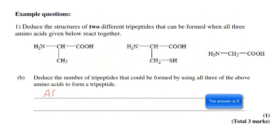This question asks you to deduce the number of tripeptides that could be formed by using all three of the above amino acids. Let's call the amino acids A, B, and C. The different orders we could have are ABC, ACB,